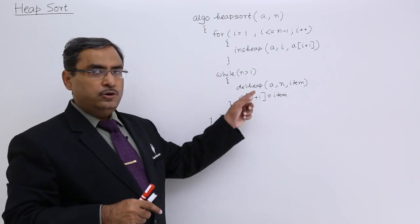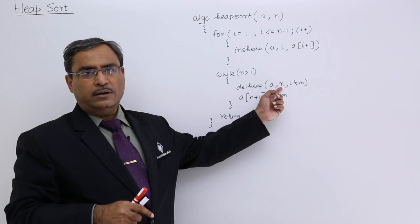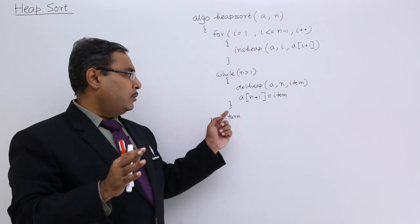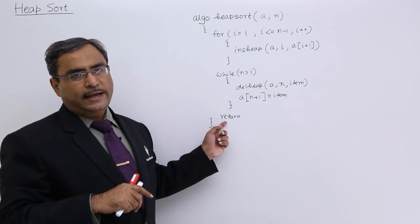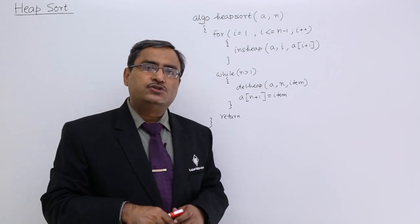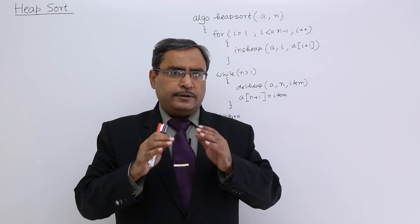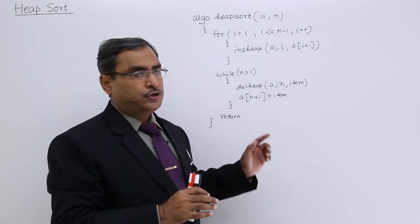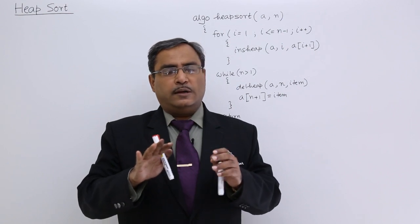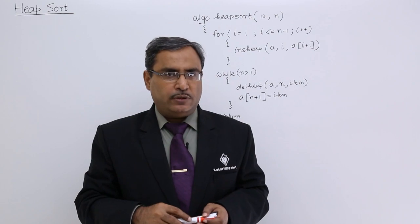So now it will keep going, and each and every time DelHIP decreases the value of n by 1. Ultimately, the condition n greater than 1 will become false, so it will exit and return — that means the end of this particular algorithm. In this way heap sort is working. We have discussed InSIP, DelHIP, and this is our heap sort. I think you are getting this logic. I have explained each and every line of this algorithm with proper examples. Thanks for watching this particular video.